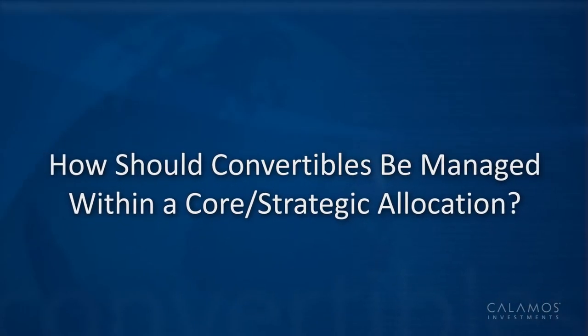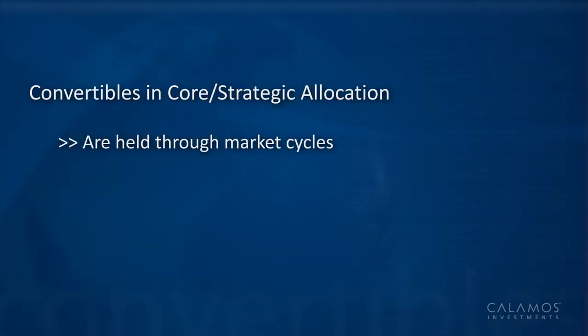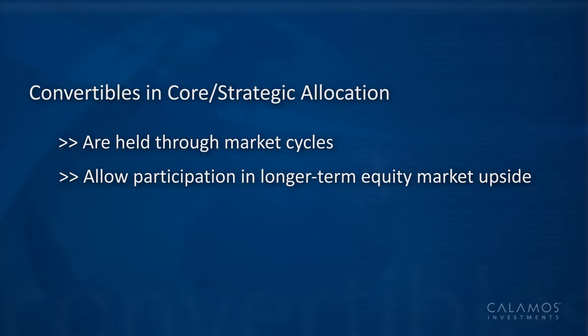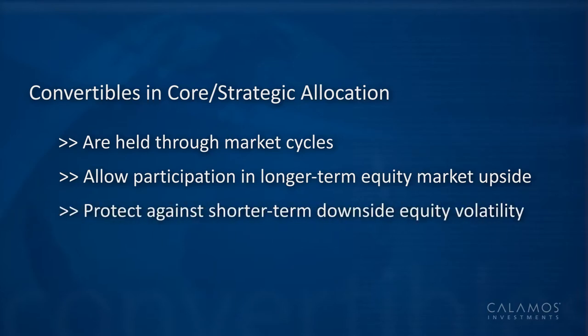We're constantly focused in our strategies on trying to achieve the best possible risk-reward so that we can participate in the upside of the equity market while also cushioning the downside. Core or strategic allocations are held through market cycles. In a core allocation, convertibles can provide a solution for investors who want to participate in longer-term equity market upside but are concerned about shorter-term downside equity volatility.